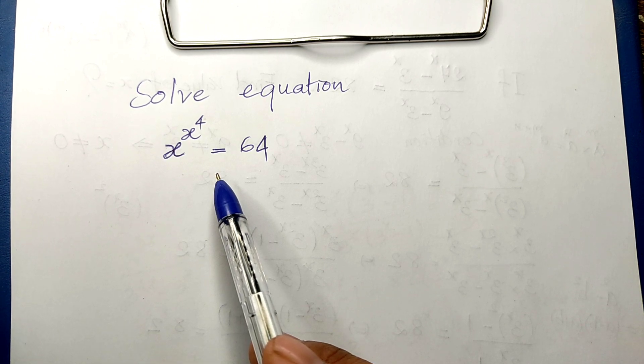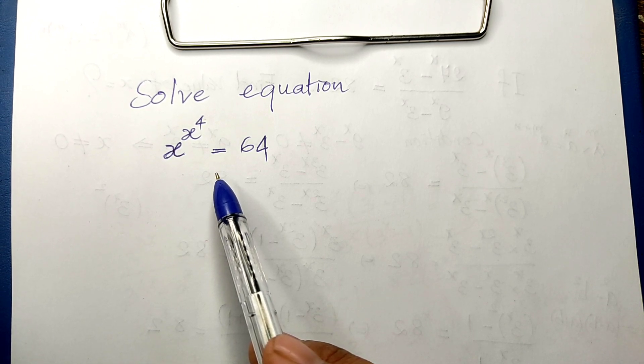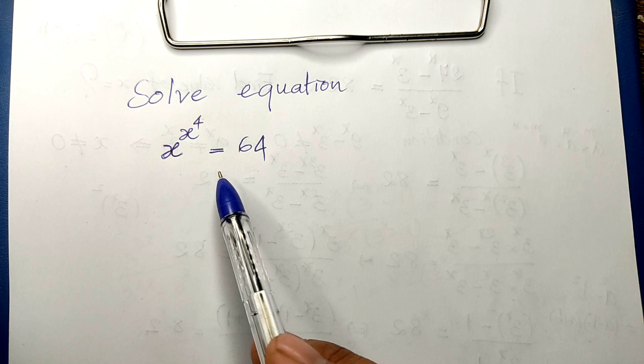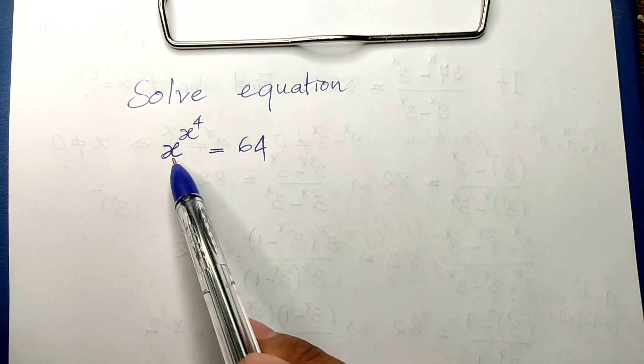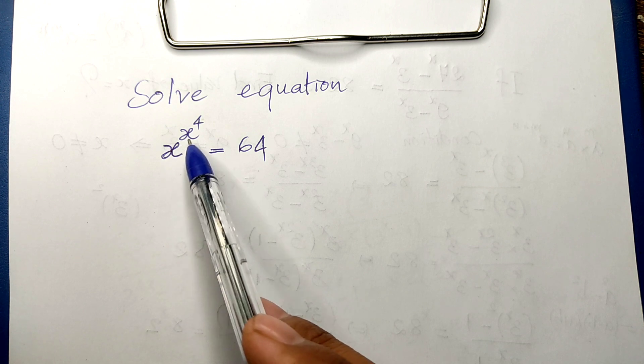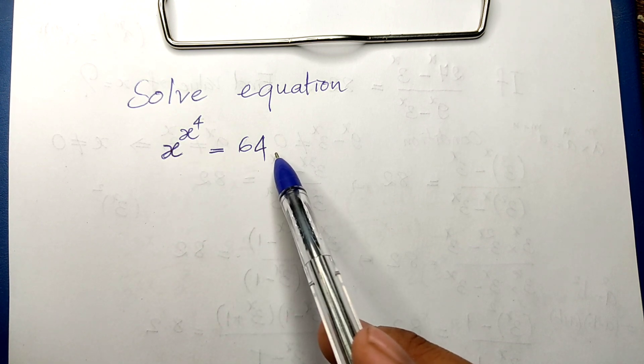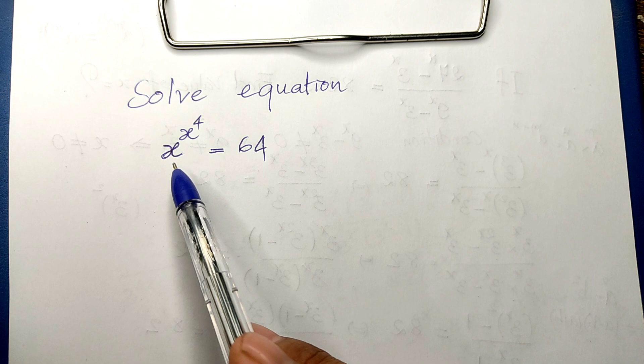And now, don't waste my time, we go to the solution together. Okay, we have x to the x to the 4th power equals 64.